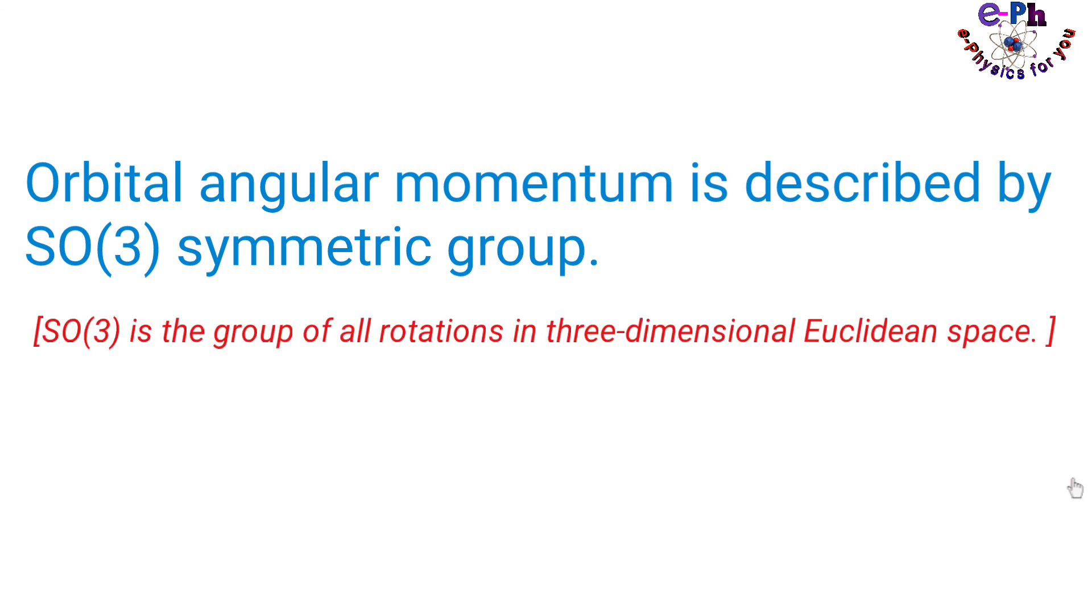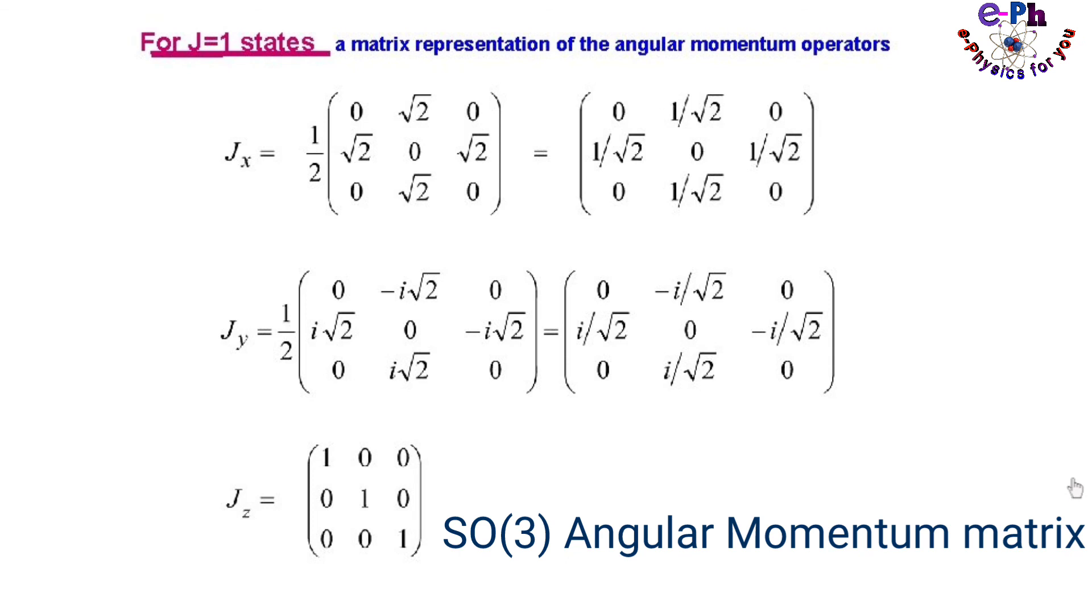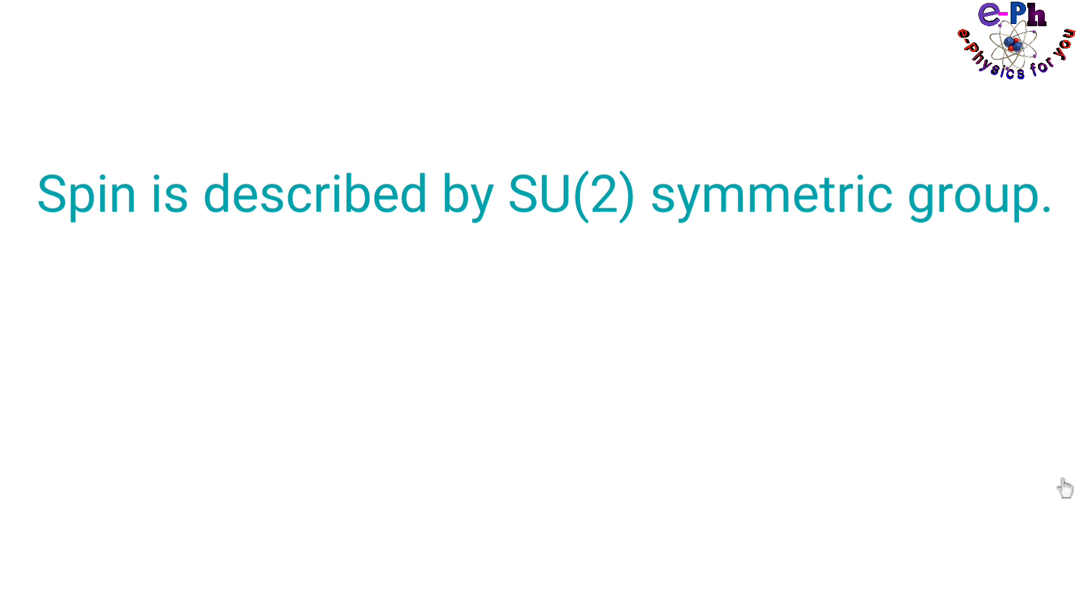Orbital angular momentum is described by SO3 symmetric group whose simplest or non-trivial representation is 3x3 matrix. On the other side, spin is described by SU2 symmetric group whose simplest or non-trivial representation is 2x2.